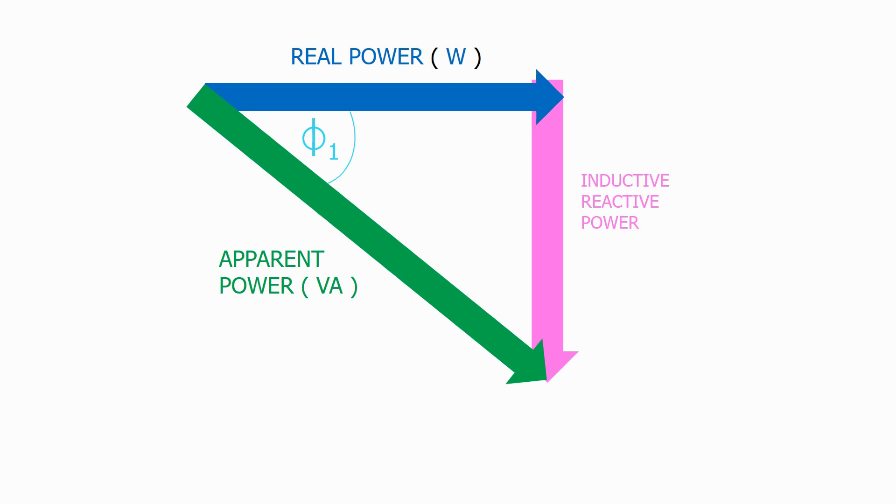In practice it would be impossible to totally cancel out the inductive reactive power of the network as the cost of the capacitors would be prohibitive. So what we normally try and do is improve the power factor to a certain level.